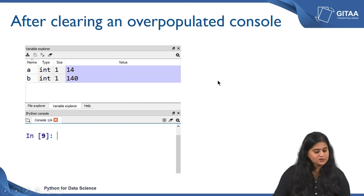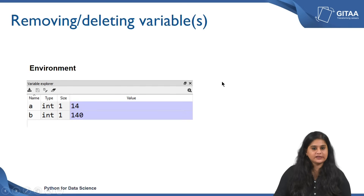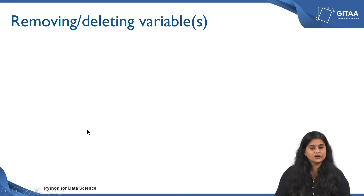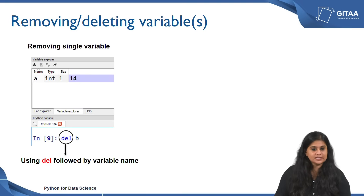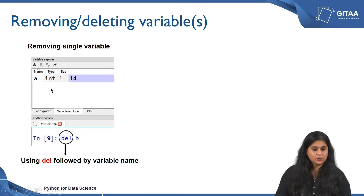Instead of just clearing the console, there is also a way to clear the environment. I might also be interested in removing or deleting a few variables from my environment. To begin with, I have two variables in my environment — a and b — with values of 14 and 140 respectively. To remove a single variable, you can type del followed by a space and then the variable name in the console. Once you hit Enter, one of the variables — in this case b — has been removed from the environment.